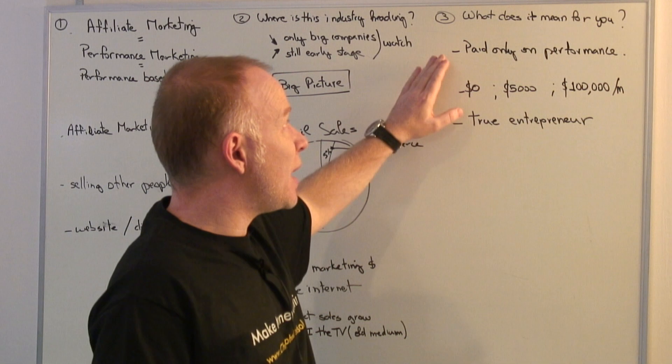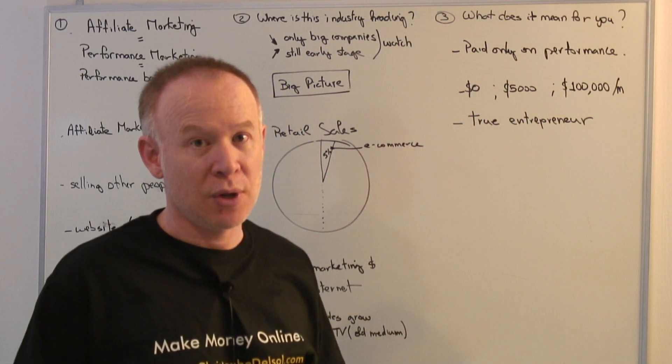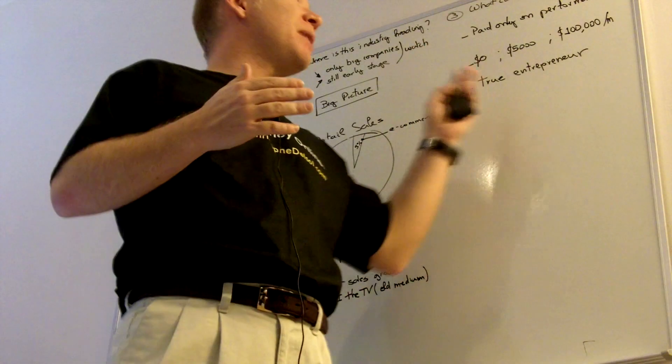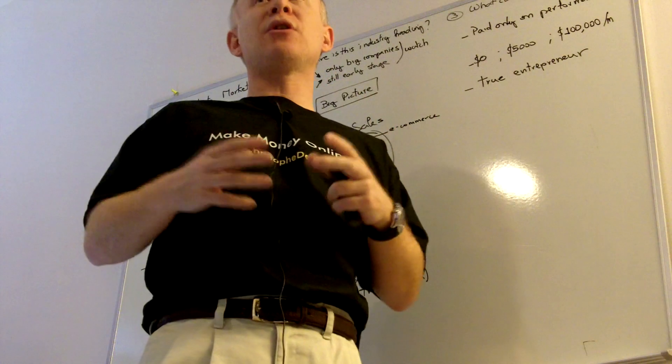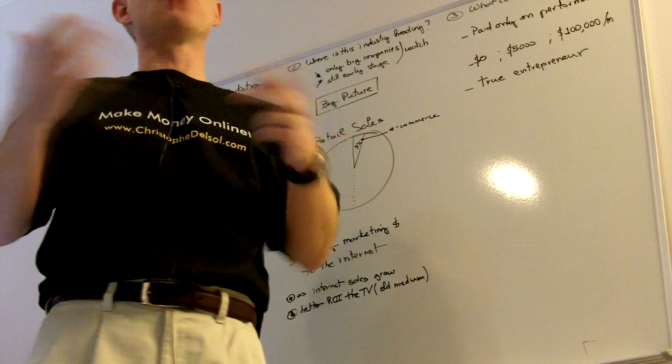So when you do affiliate marketing, you're really entering the world of the true entrepreneur, meaning you have no guarantees. When you become an affiliate marketer, you're really an entrepreneur, a true small-based entrepreneur, with the rewards and the risk.